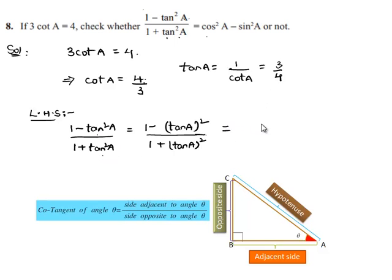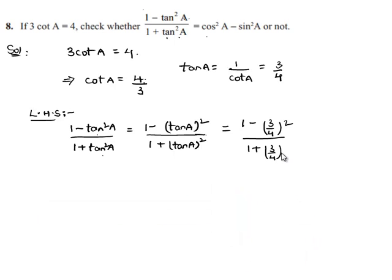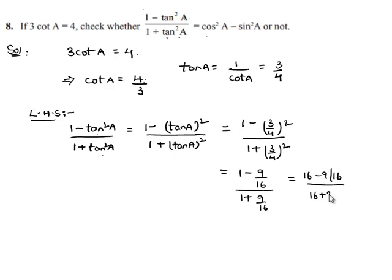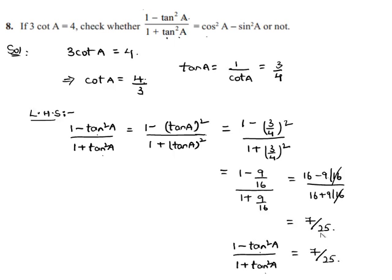So (1 minus tan square a) by (1 plus tan square a) will be equal to (1 minus 3 by 4 whole square) by (1 plus 3 by 4 whole square), which is (1 minus 9 by 16) divided by (1 plus 9 by 16), which equals (16 minus 9) by 16 divided by (16 plus 9) by 16. The 16s in the denominator cancel, giving us 7 by 25. Therefore, the value of LHS is 7 by 25.